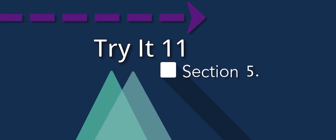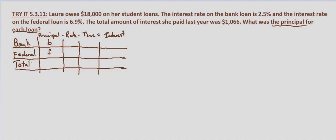In this problem, we're told that Laura owes $18,000 on her student loans. The interest rate on the bank loan is 2.5% and the interest rate on the federal loan is 6.9%, and the total amount of interest she paid last year was $1,066. We're asked what was the principal for each loan? So let's let B equal the principal for the bank loan, F equal the principal for the federal loan, and we know the total amount is $18,000.